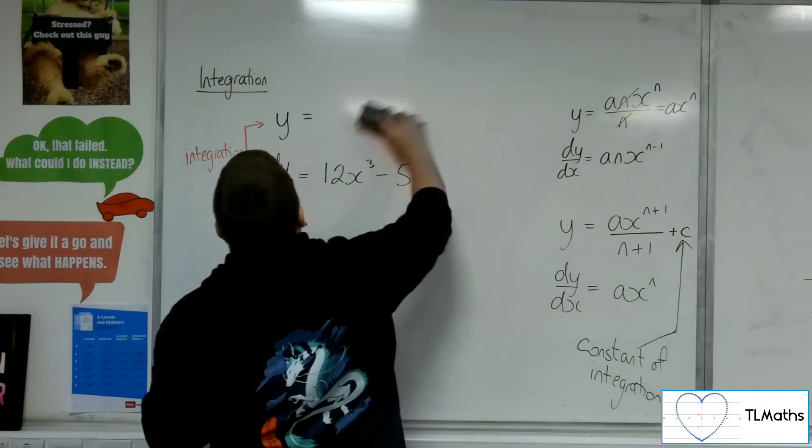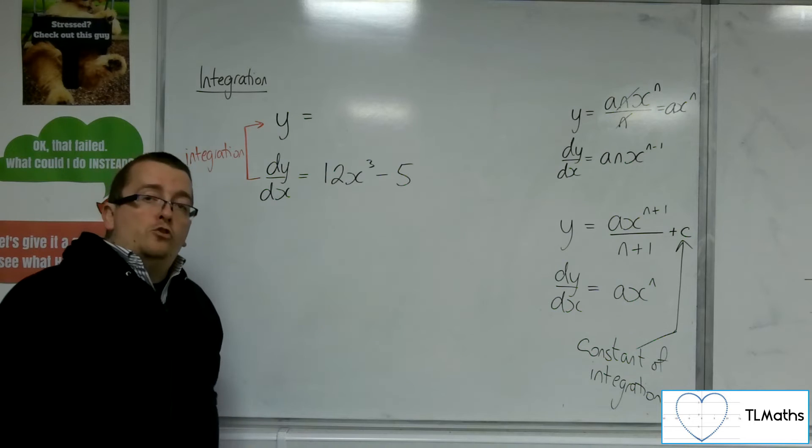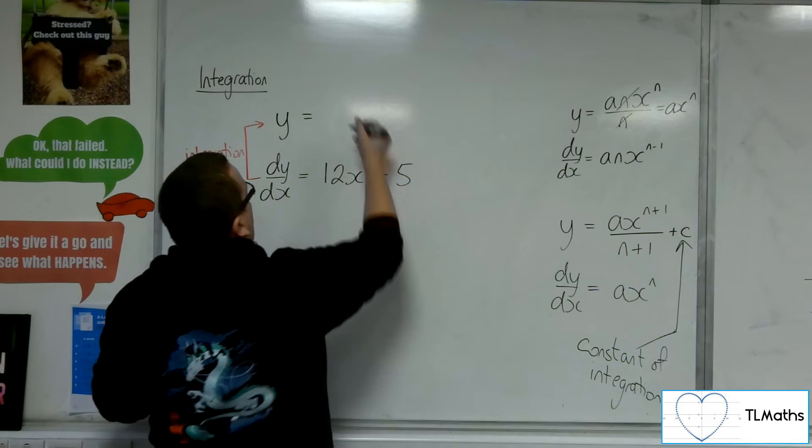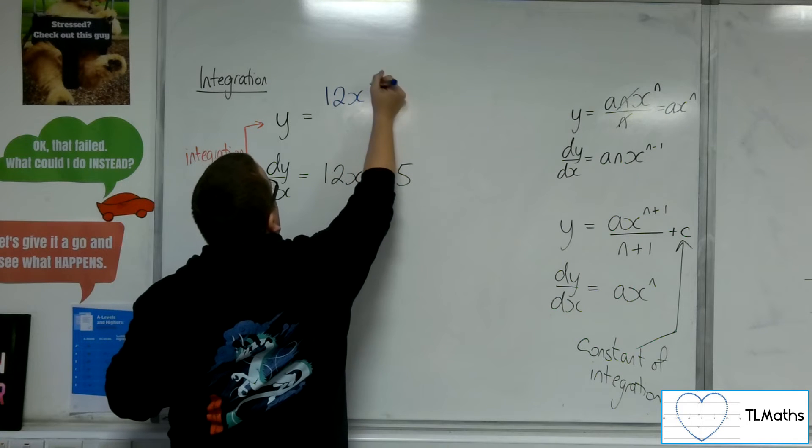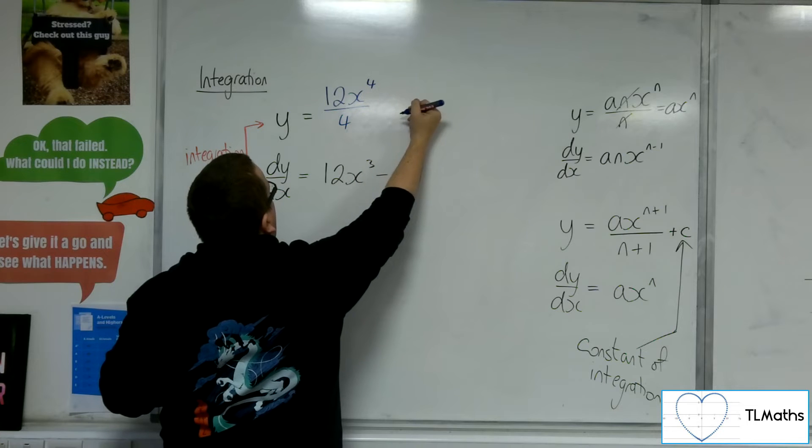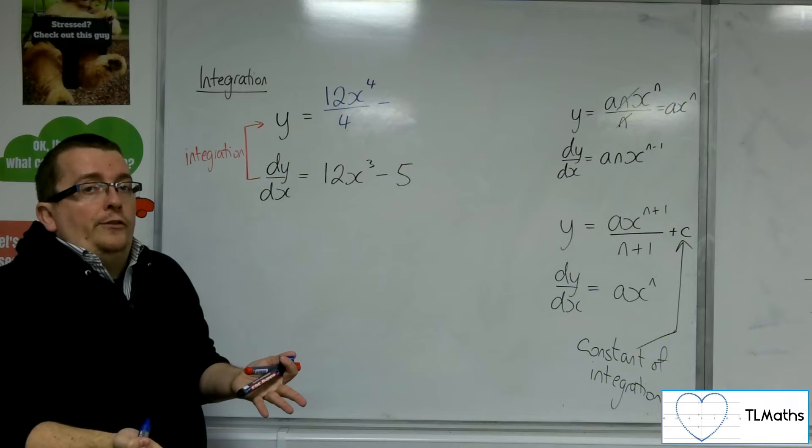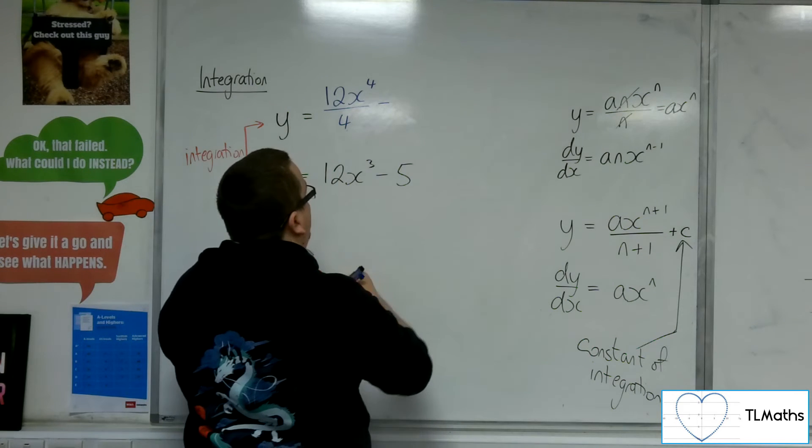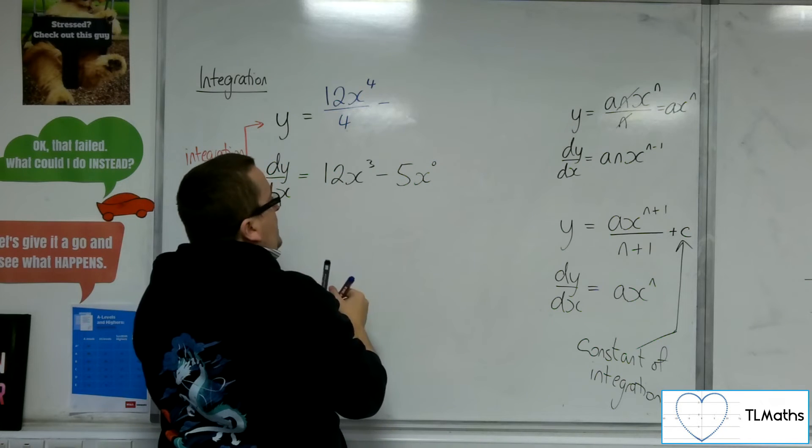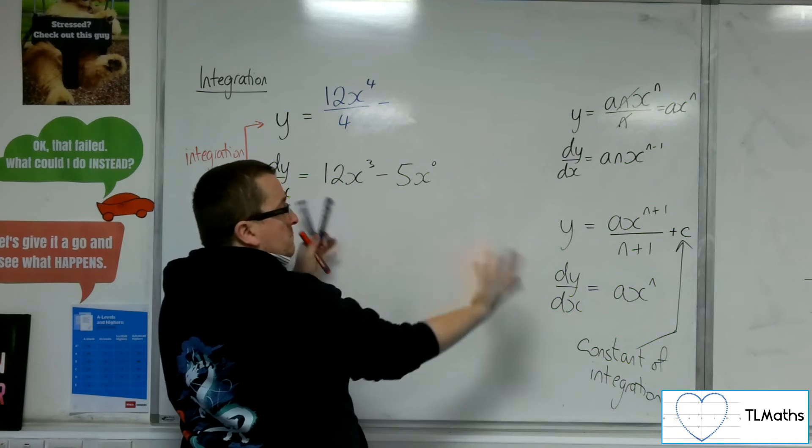So, if I didn't know what the original curve was, and I started out with the gradient function, then what I need to do is I need to add 1 to the power. So I add 1 to the power. Divide by the new power. Now, you can use the same rule here with the minus 5 if you like. You've just got to imagine that the minus 5 is minus 5x to the 0. Because then you can think, well, I add 1 to the power, I get minus 5x to the 1 divided by 1.